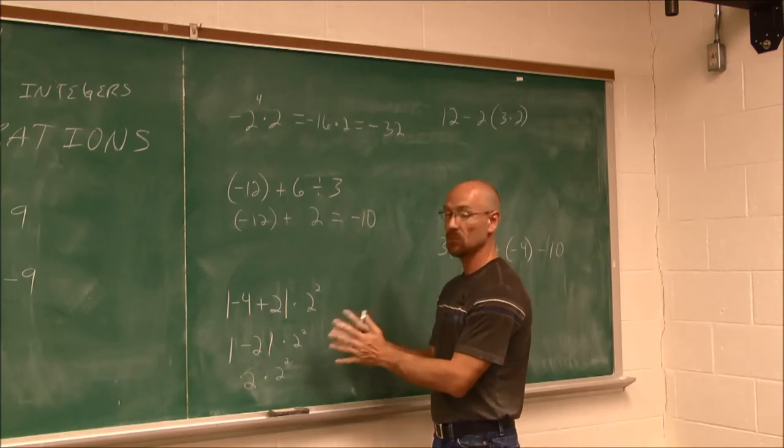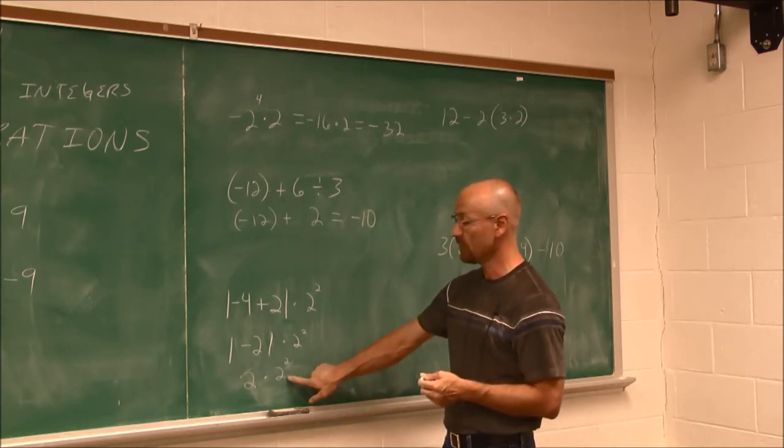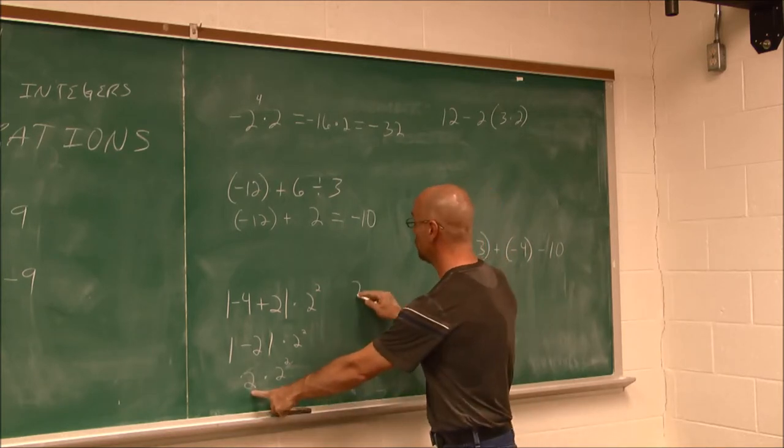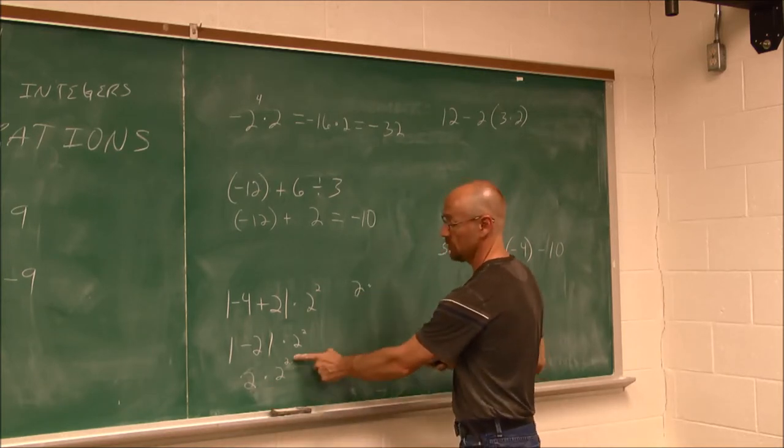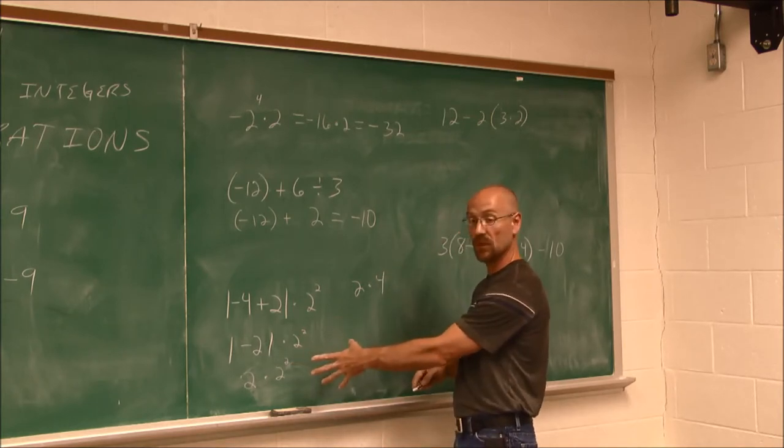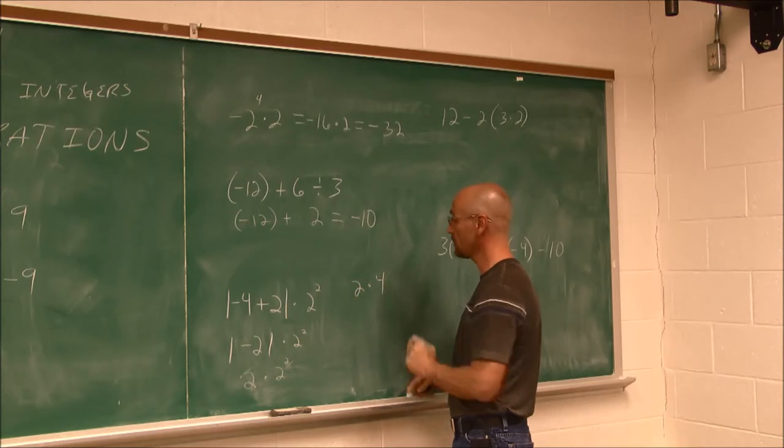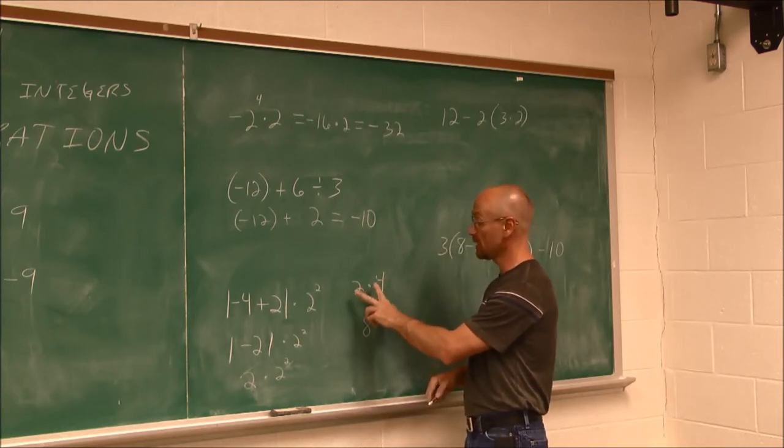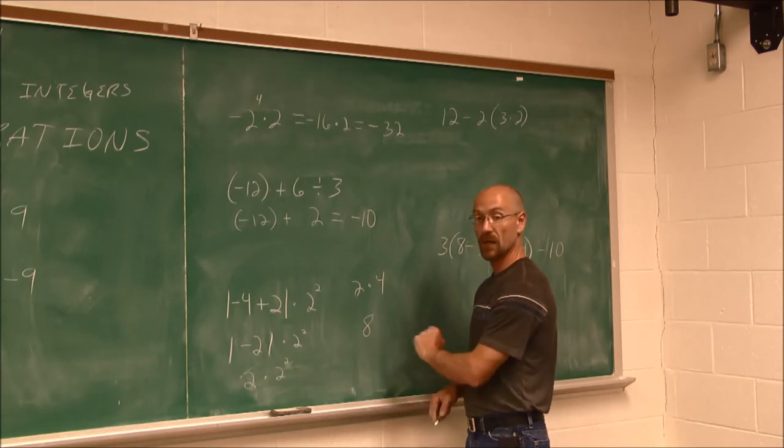And now we're done with our grouping symbols. We can move on to exponents. I have to evaluate this. 2 squared is 4. So I have 2 times 2 squared, I evaluated that to be 4. And now that the exponent's been evaluated, I can now multiply. 2 times 4 is 8. They had the same sign, so it's not going to change. We get a positive 8.